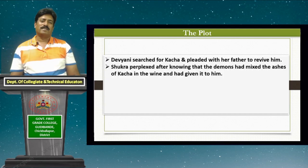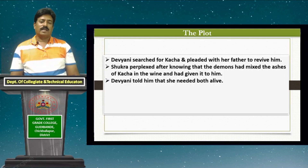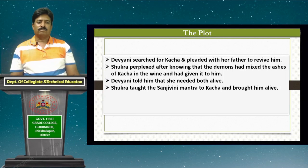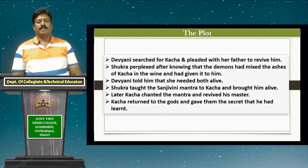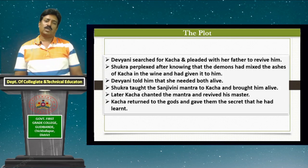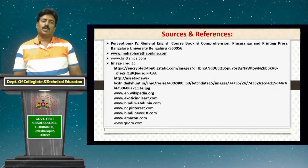In that crucial moment, Shukracharya asked his daughter Devayani who was more precious to her. Devayani told him she needed both alive. Consequently, Shukracharya taught the Sanjivini mantra to Kacha and revived him. Kacha then chanted the Sanjivini mantra and revived his master Shukracharya. Devayani was very happy that both were alive. After a few days, Kacha took leave of Shukracharya and his daughter, returned to the gods, and gave them the secret he had learned.